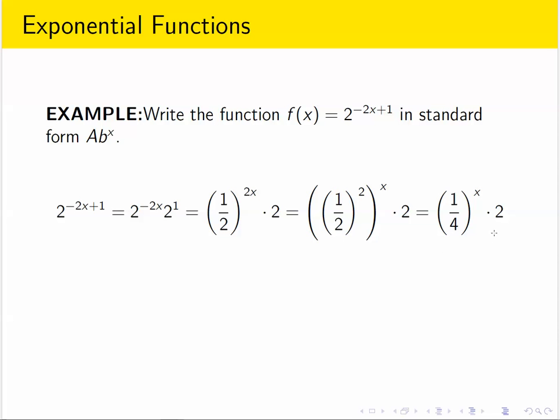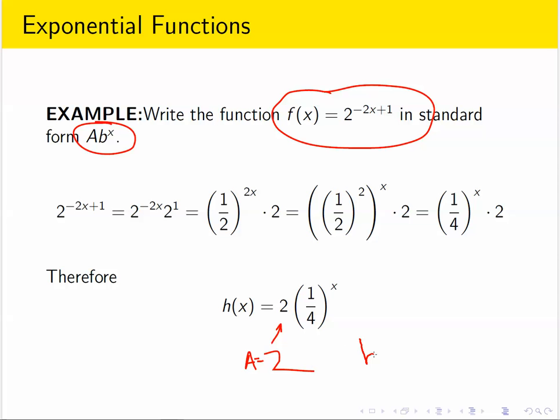And now I have basically the form I want. The only thing in the exponent is the x. And as in a previous example, I can bring the two in front so I get the form I'm used to with the coefficient in front of a power of the growth factor. So the original function, which looked like it was written in a completely different form, can actually be written in our standard form with a equal to two and b equal to one fourth.